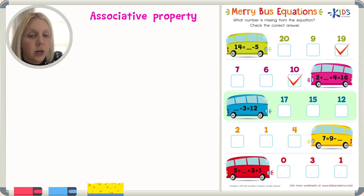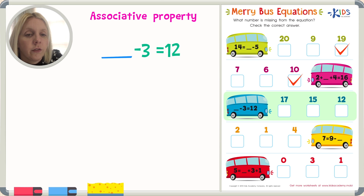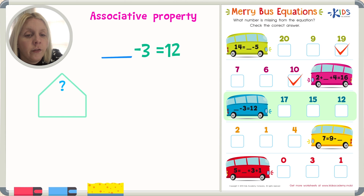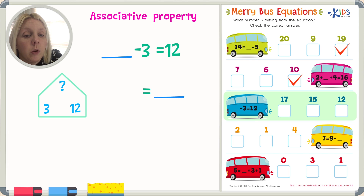The next one is: blank minus three equals twelve. In a subtraction problem, the biggest number comes first, and that one we do not know. The next number we have is three, and the last number we have is twelve. So we need to find that first number. We're going to put this unknown on the end, which means we add the two known numbers together: three plus twelve equals what?